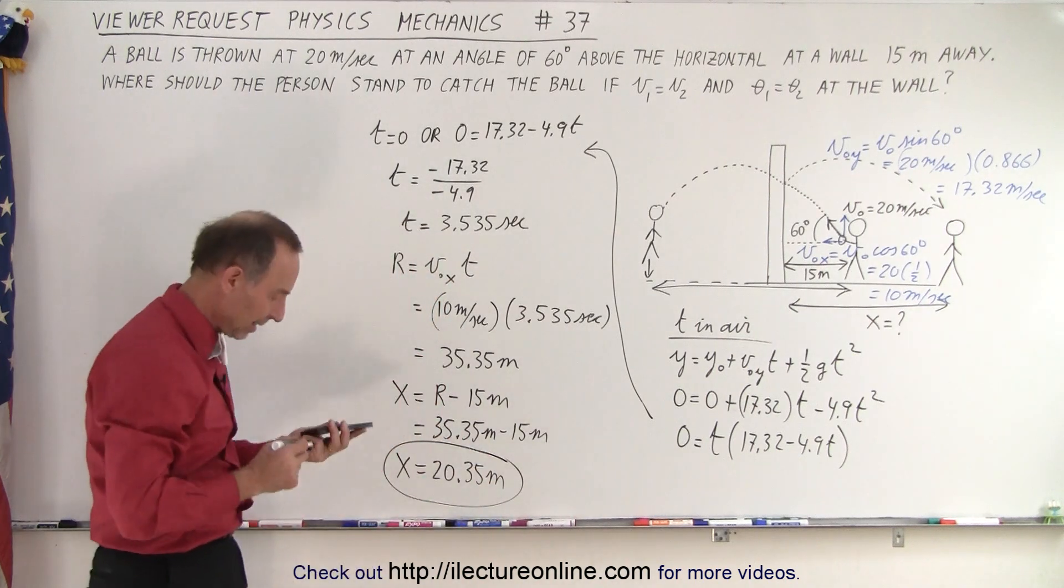And then we could say, well, if it's 15 meters to the wall, then how much further is it past the wall that would be the distance going back? That means that x is equal to the range minus the 15 meters to the wall. So this would be 35.35 meters minus 15 meters, or x equals 20.35 meters. So the person would have to move back a little bit over five meters to catch the ball as it bounces against the wall.